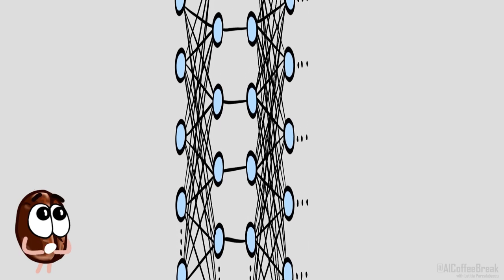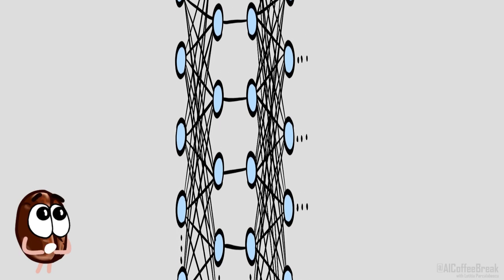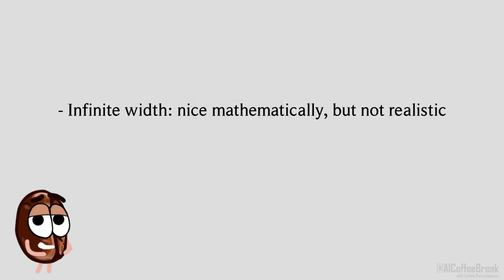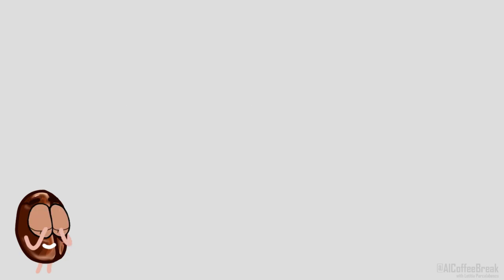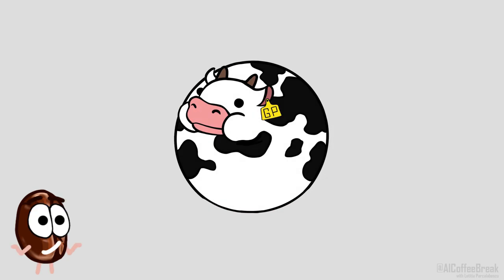However, if we go all the way to infinite width, too many details would be averaged out. The model you'll end up with has mathematically pleasant behavior and nice closed form solutions, but on the other hand, it has lost a lot of what makes neural networks interesting and effective in the first place. We are essentially approximating cows with perfect spheres.